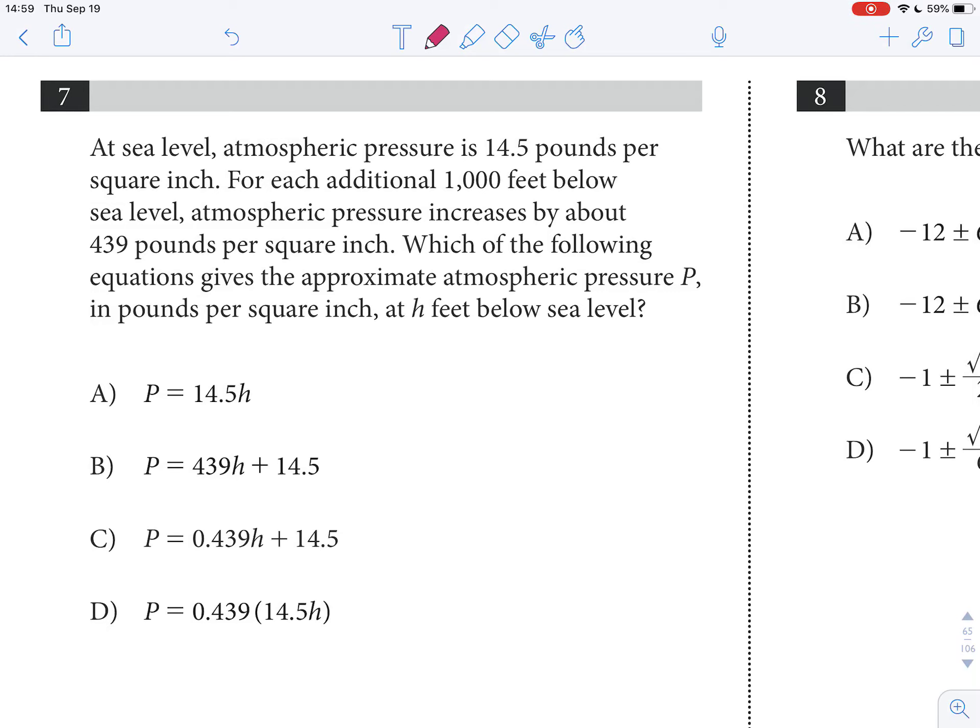Alright, so at sea level, atmospheric pressure is 14.5 pounds per square inch. For each additional 1,000 feet below sea level, atmospheric pressure increases by about 439 pounds per square inch. Which of the following equations gives the approximate atmospheric pressure P in pounds per square inch at H feet below sea level?